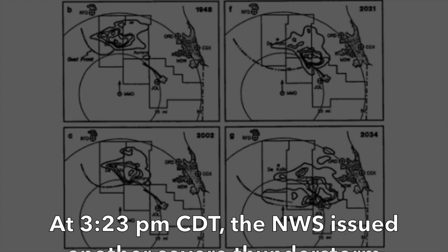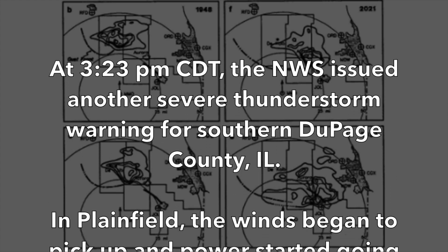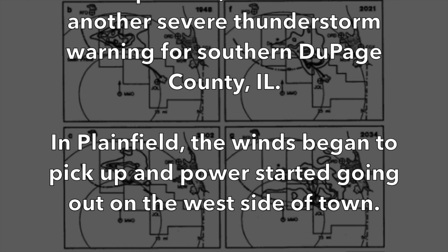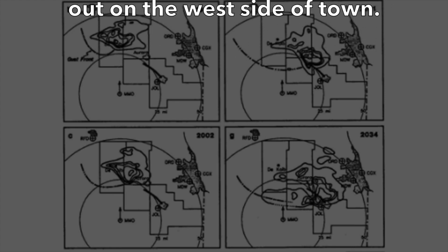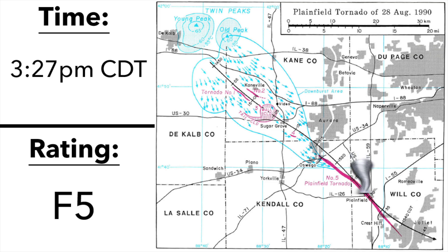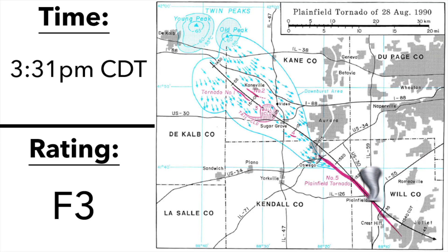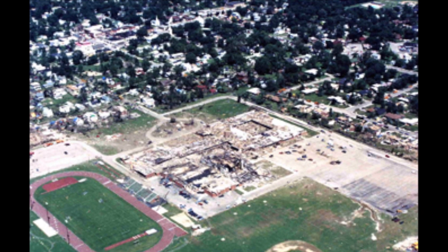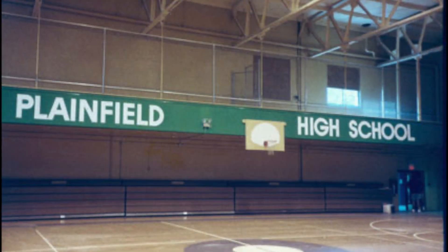At 3:23 p.m., the National Weather Service issued another severe thunderstorm warning for southern DuPage County, Illinois. In Plainfield, the winds began to pick up and power started going out on the west side of town. Shortly thereafter, the tornado would increase to a devastating F4 to F5 as it struck the Wheatland Plains subdivision in rural Plainfield. At 3:31 p.m., Plainfield High School suffered a direct hit. Both the football and volleyball teams were practicing at the time but took shelter before the storm arrived.